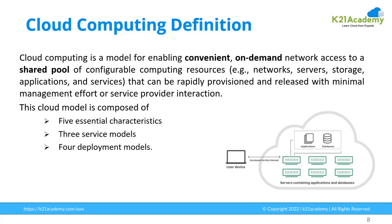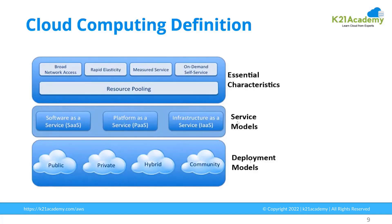Cloud computing is composed of five essential characteristics, three service models, and four deployment models. The five essential characteristics are: resource pooling — a pool of servers, network, or storage from which you get your resources; on-demand self-service; measured services — you can measure and provision as required; rapid elasticity — as demand increases you scale up, and as demand goes down you scale down; and broad network access.